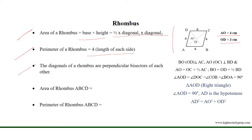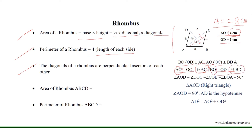Since the diagonals of a rhombus are perpendicular bisectors of each other, BO and OD are perpendicular to diagonal AC, and AO and OC are perpendicular to diagonal BD. Since they bisect each other, AC equals 2 times AO equals 8 cm, and BD equals 2 times OD equals 6 cm.